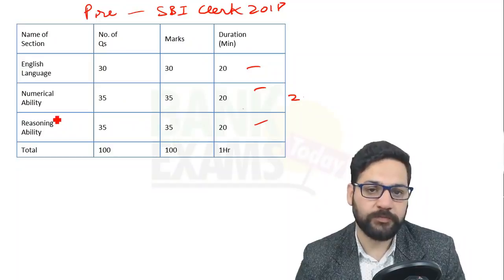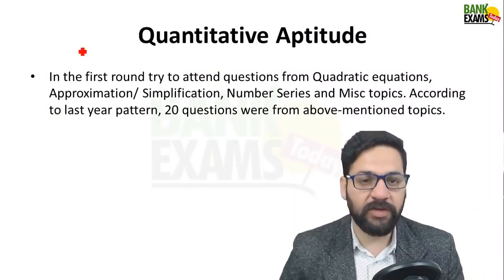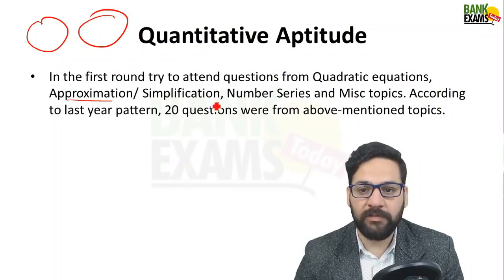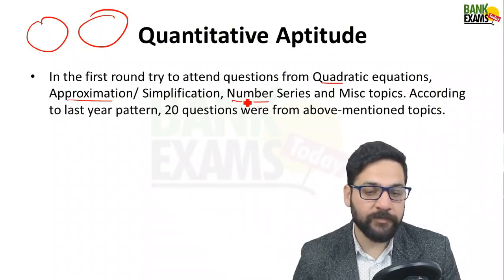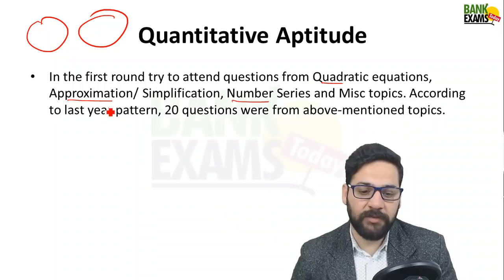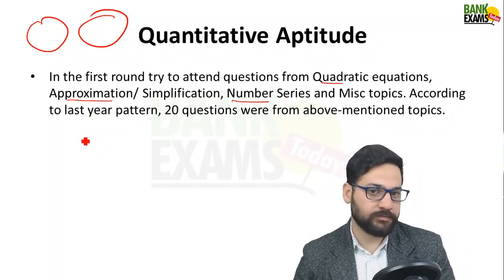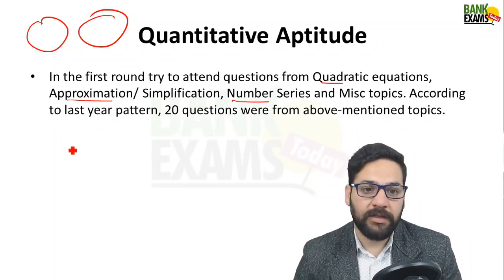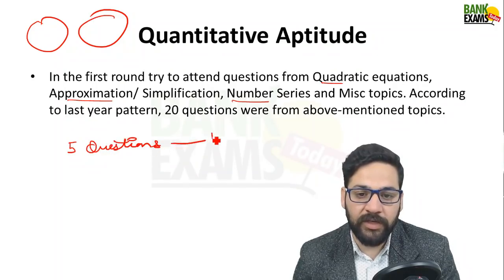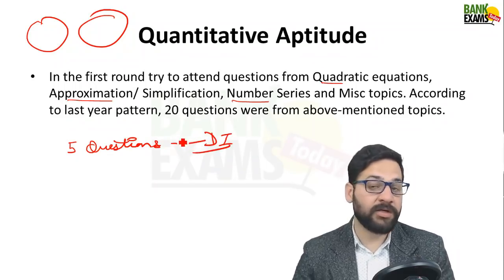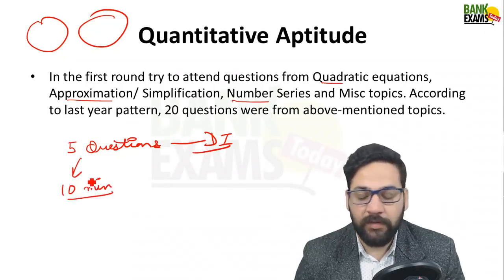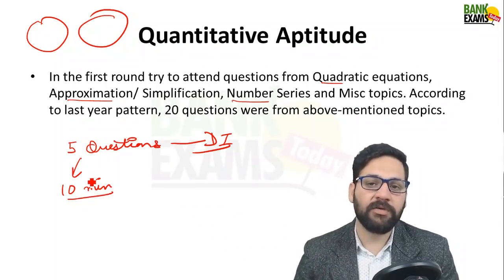For quantitative aptitude, divide the whole syllabus into two parts. There are topics like approximations, simplification, quadratic equation, and number series — these take less time. While in Data Interpretation there are sets of five or six questions. Sometimes if you start with a DI set and you are not able to solve it within 10 minutes, there will be very low probability that you will actually crack the exam.